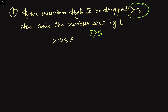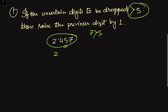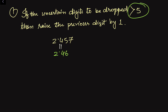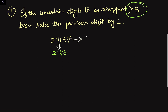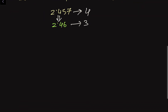We will raise the previous digit by one. The previous digit here is 5. So if we want to round off this number up to three significant digits, we will have 2.46 — the 5 is raised by one. We have rounded 2.457 from four significant digits to three significant digits.